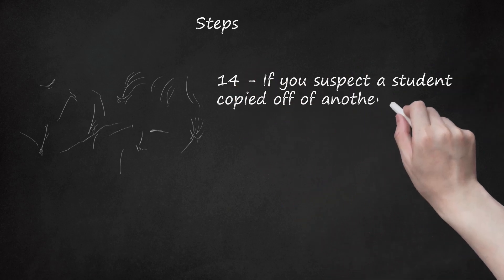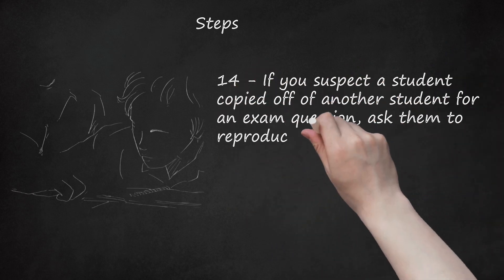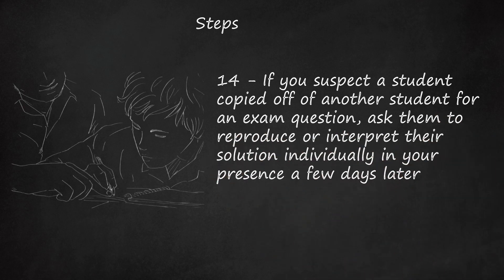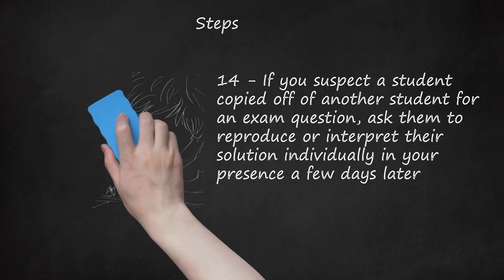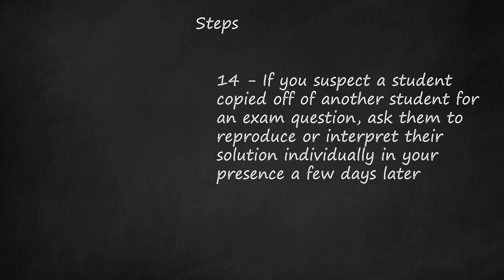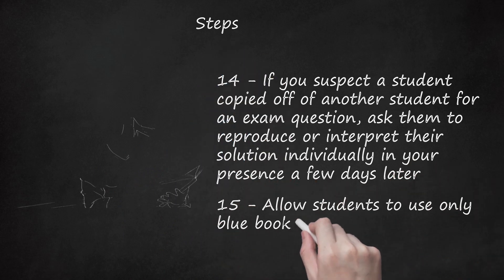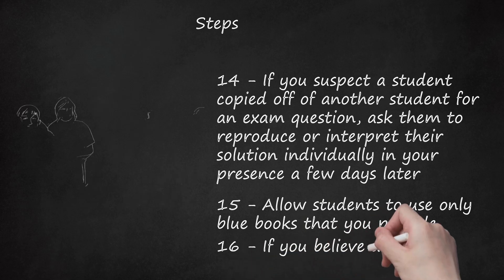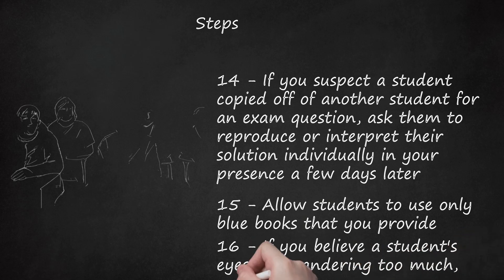Step 14: If you suspect a student copied off of another student for an exam question, ask them to reproduce or interpret their solution individually in your presence a few days later. If there is a large difference in their ability to produce that solution during the exam and reproduce the solution individually in your presence, cheating may have occurred. If the student cannot walk you through their approach while being shown the solution they provided, that is definitely a sign that the student may have copied their answer. Step 15: Allow students to use only blue books that you provide, so you can make sure that they are taking an exam with a clean blue book.